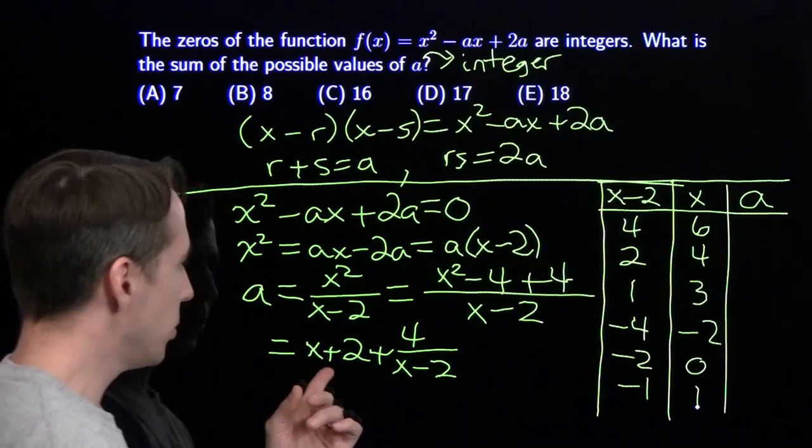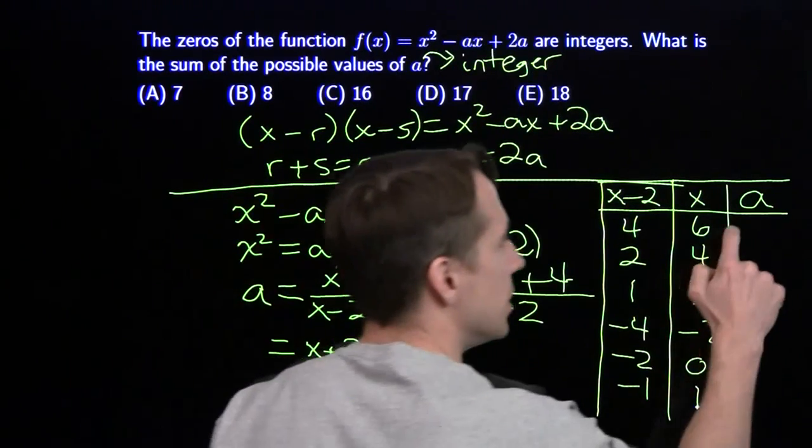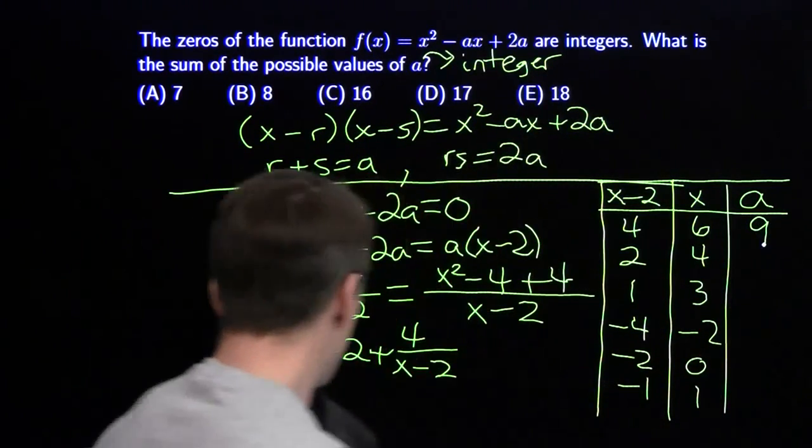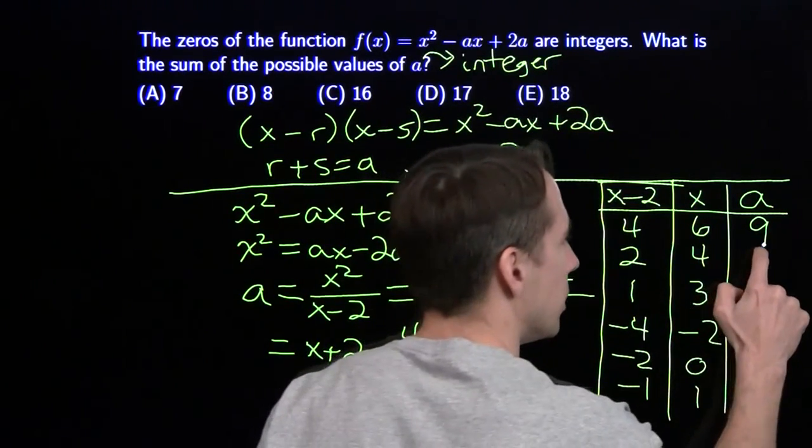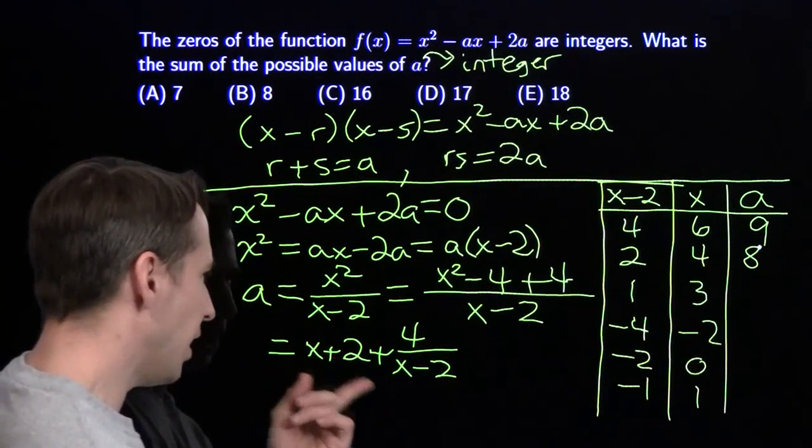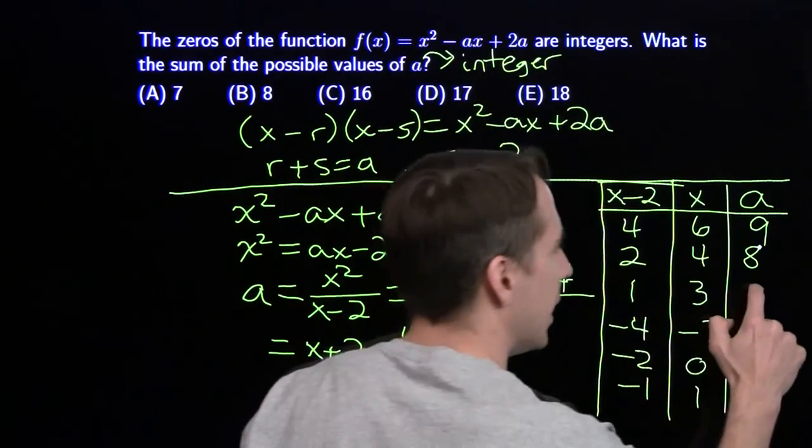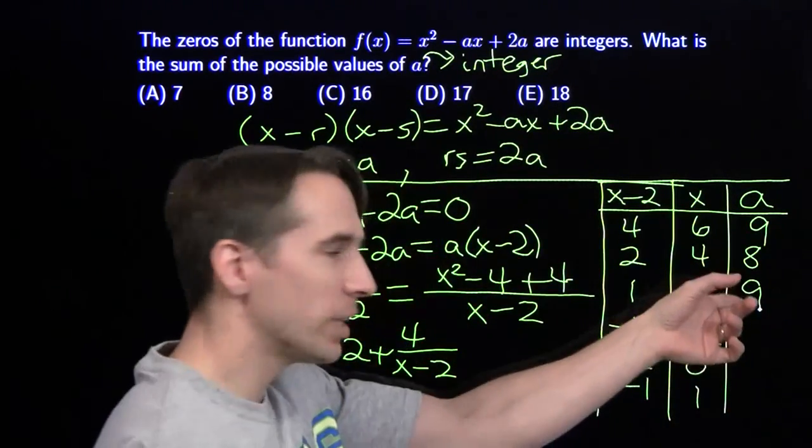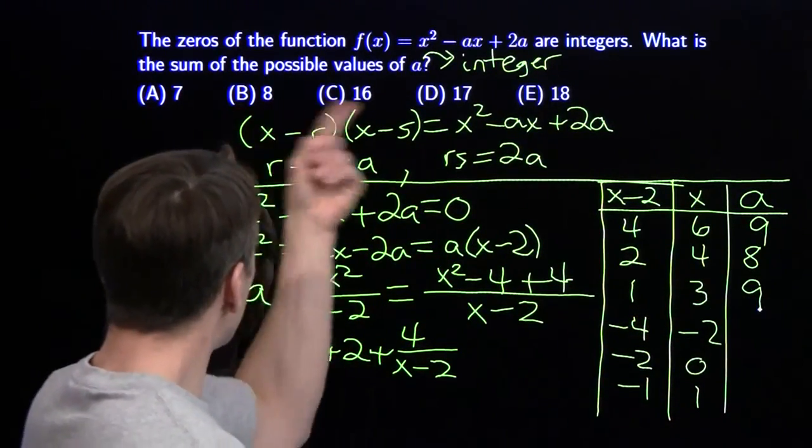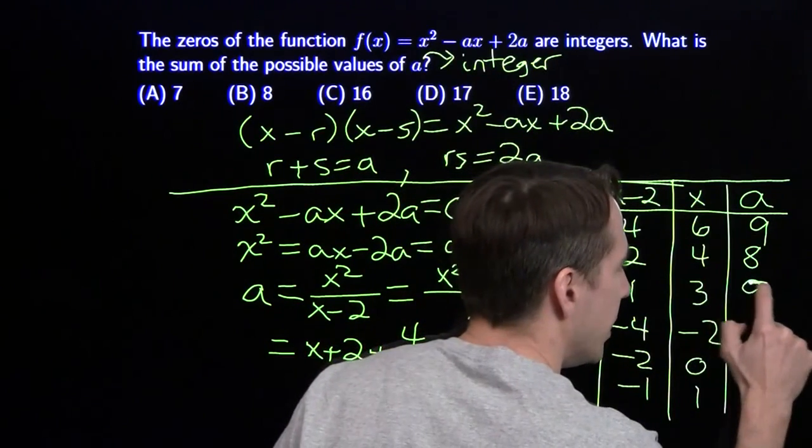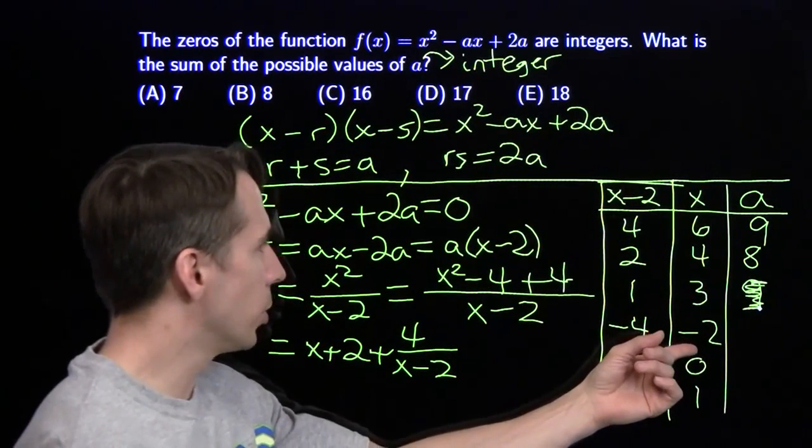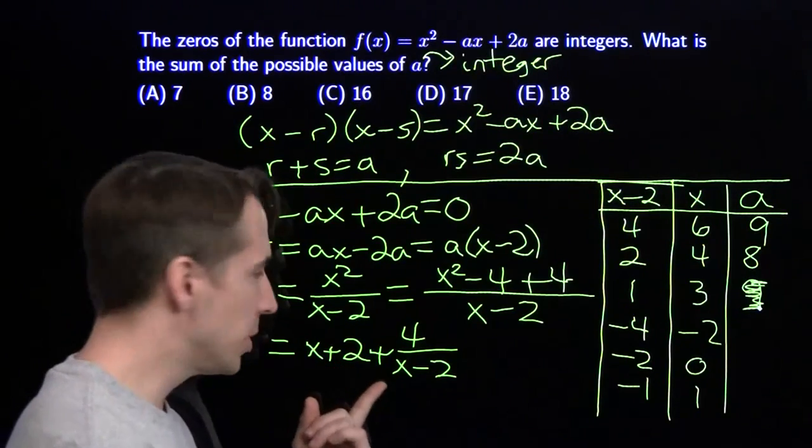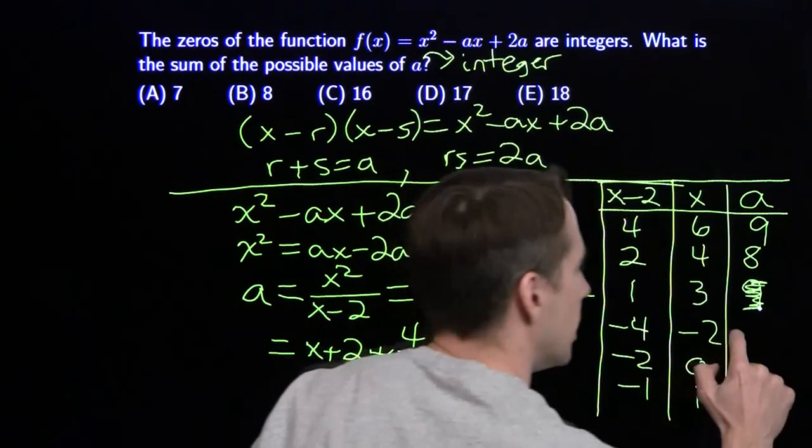Putting in 6 gives 8 + 1 = 9. x = 4 gives 6 + 2 = 8. x = 3 gives 5 + 4 = 9. I don't want to count 9 twice, so I'll wipe that out. x = -2 gives 0 - 1 = -1. x = 0 gives 2 - 2 = 0.